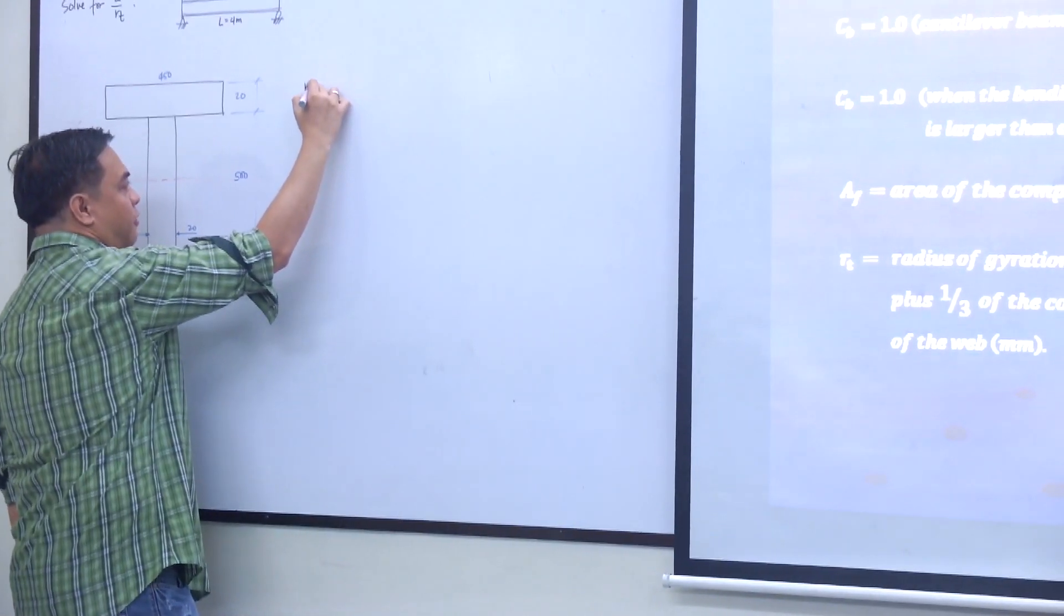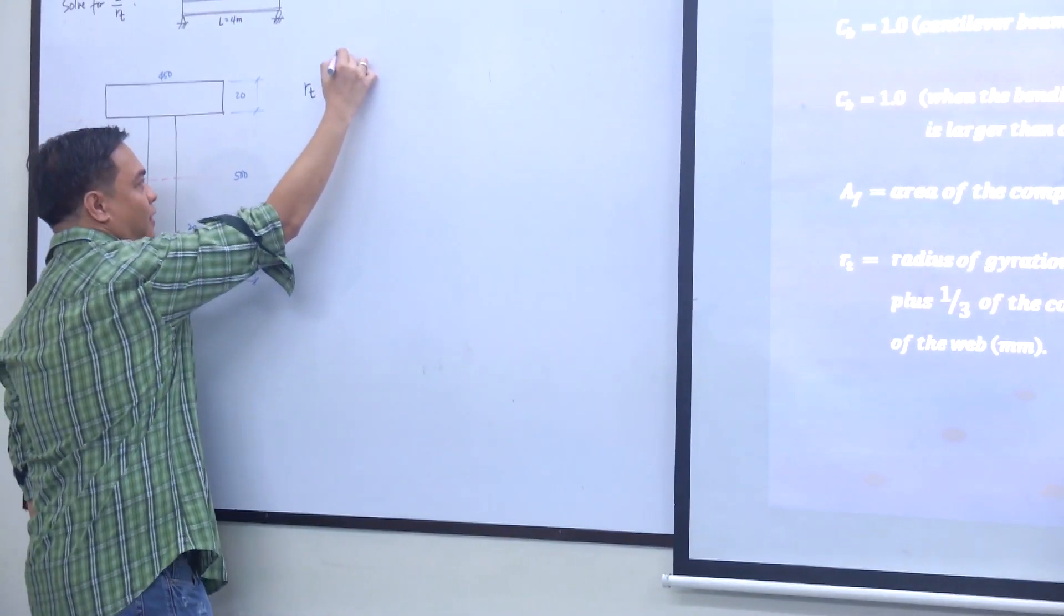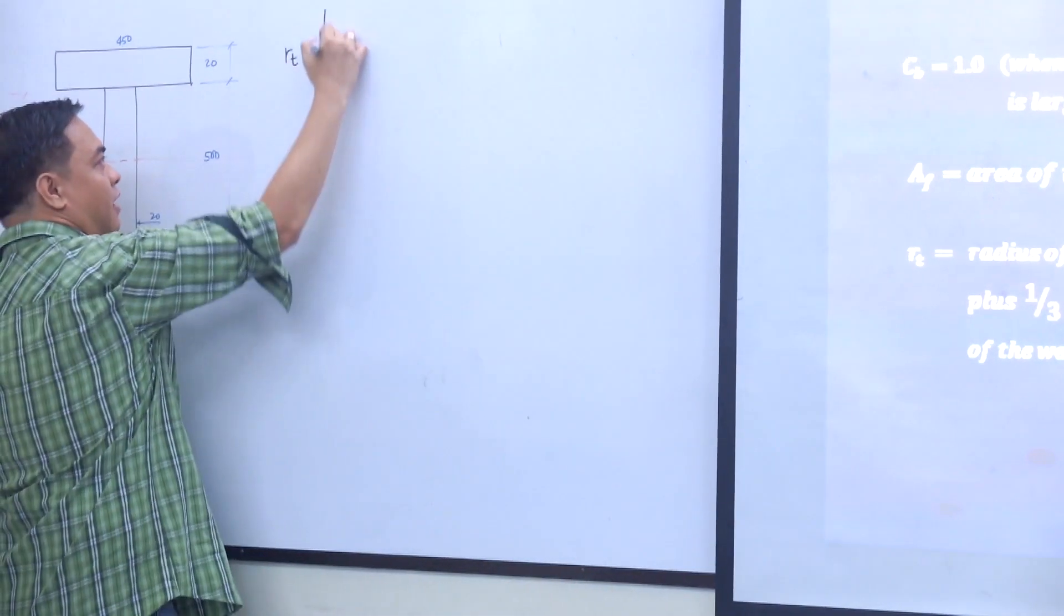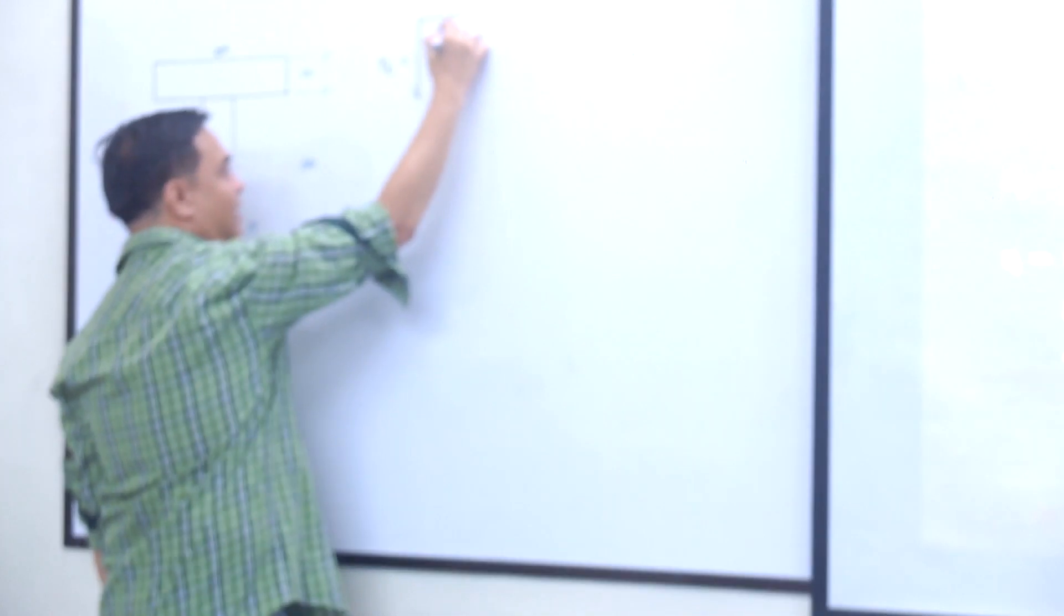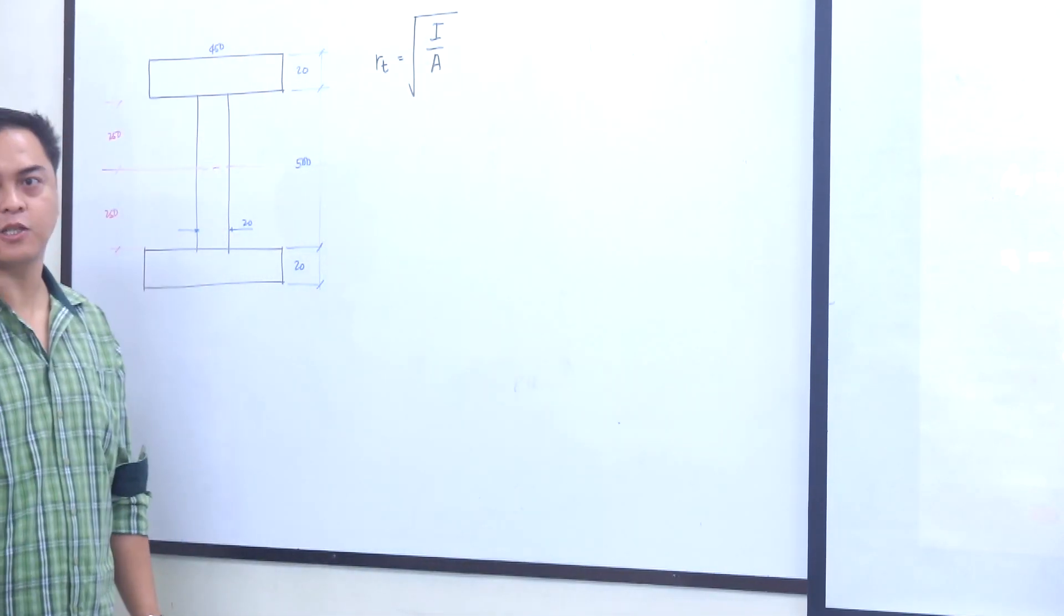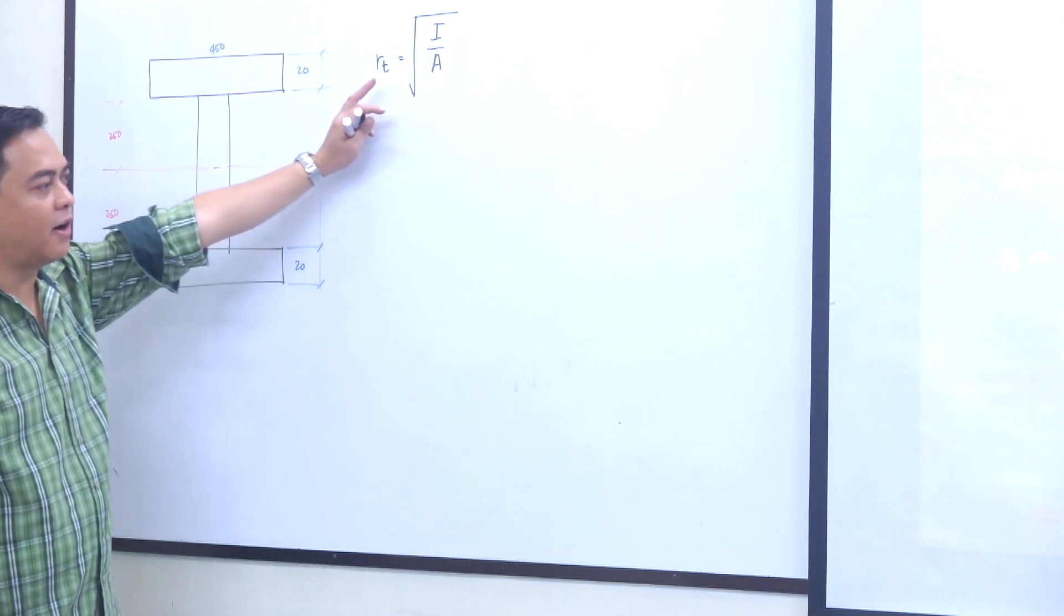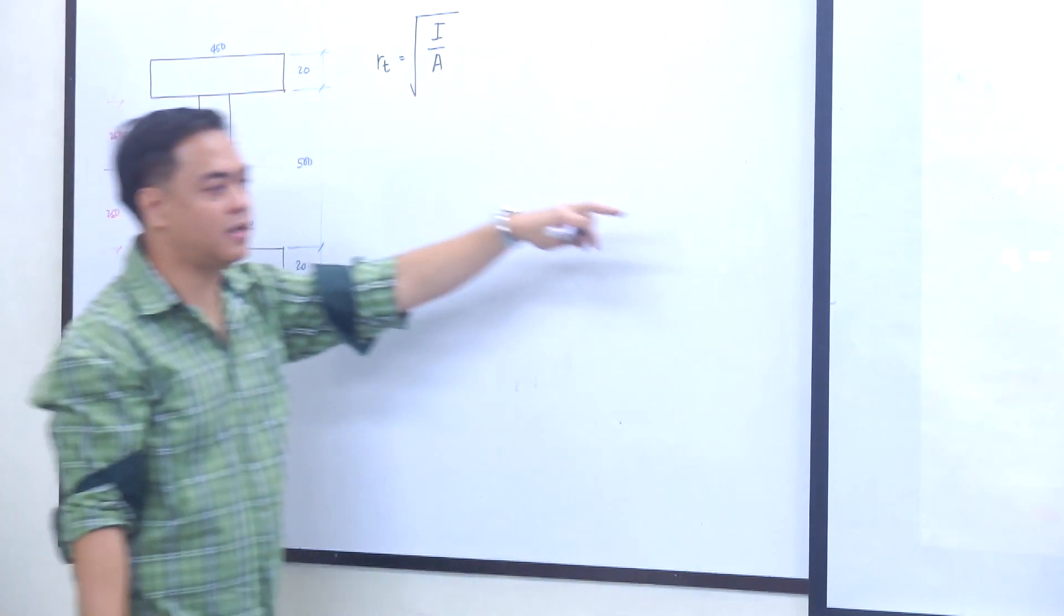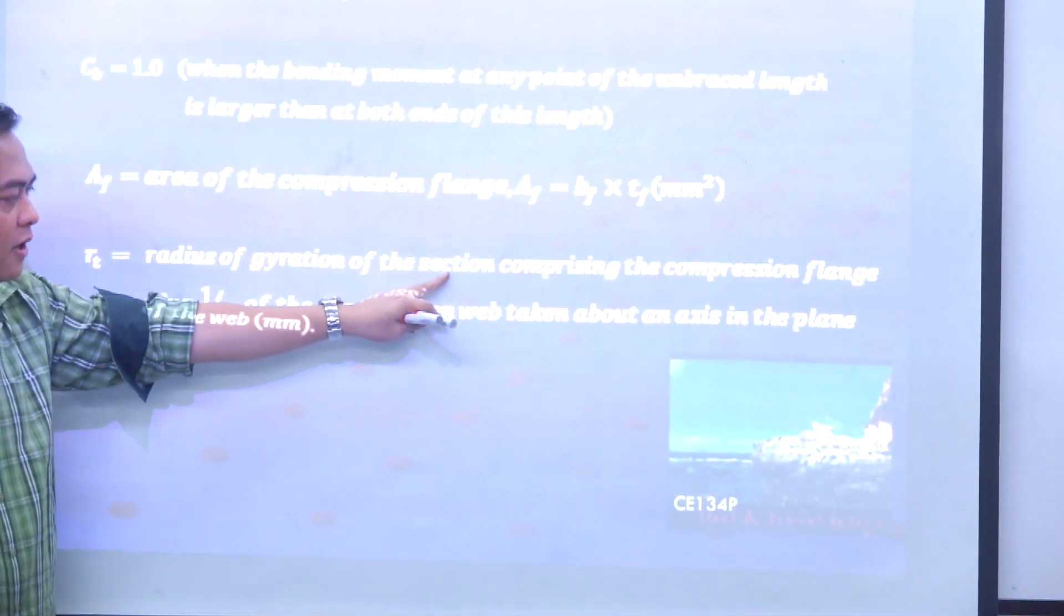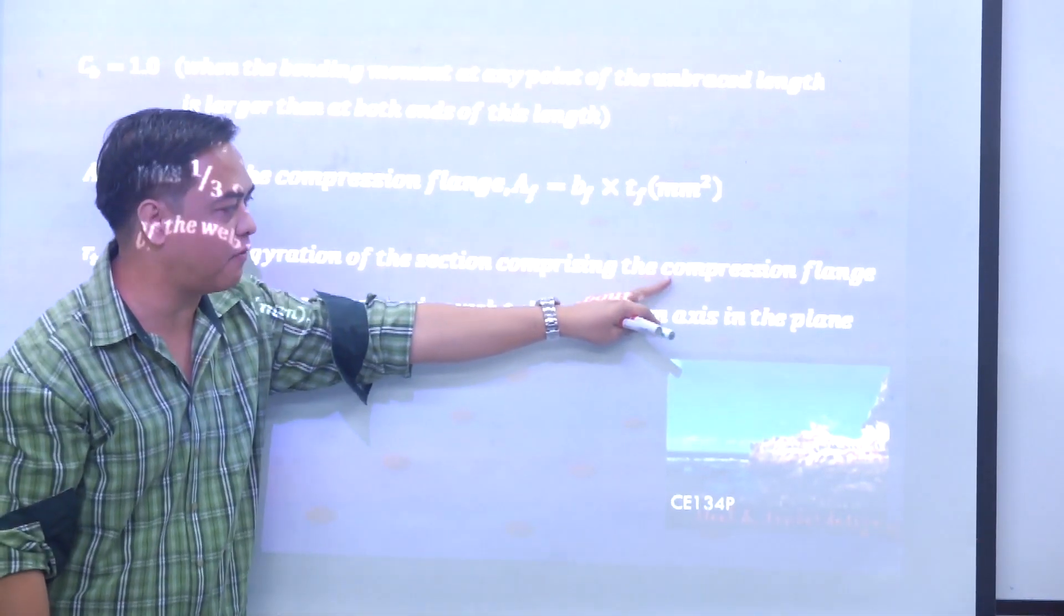When you hear radius of gyration, what is the equation? Square root of I over A. But R sub D is a special radius of gyration, particularly on the compression side of the beam, of the section comprising the compression flange.